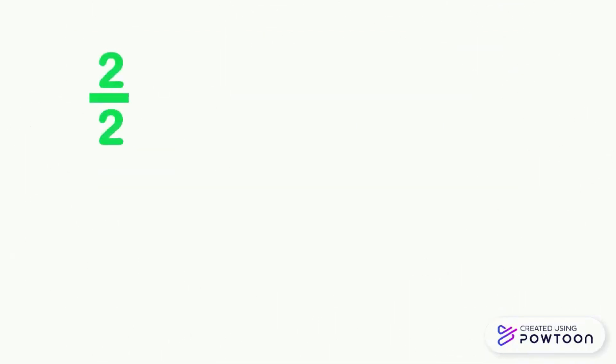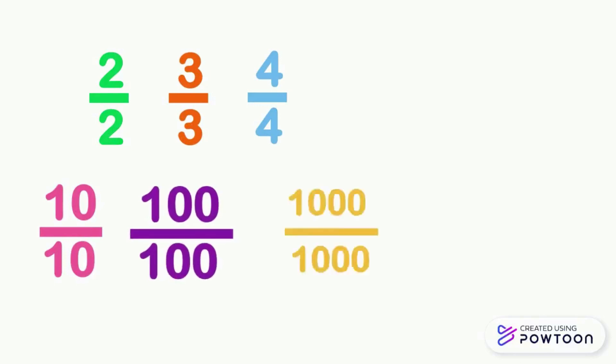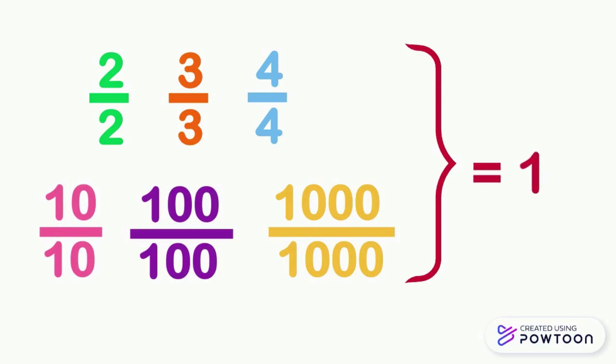The fractions 2 over 2, 3 over 3, 4 over 4, 10 over 10, 100 over 100, 1000 over 1000, etc., are all equal to 1, since we have taken all the parts at the same time.